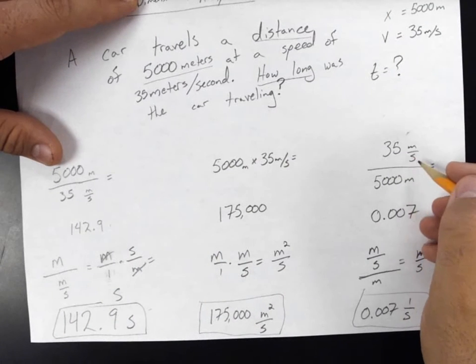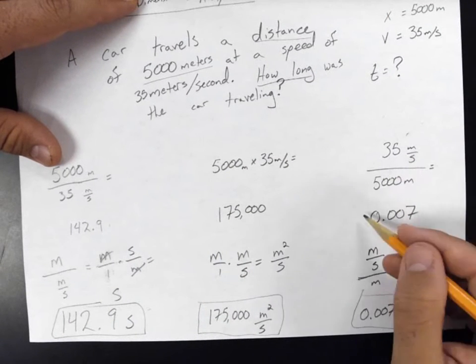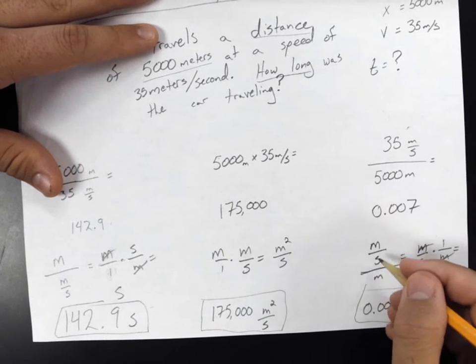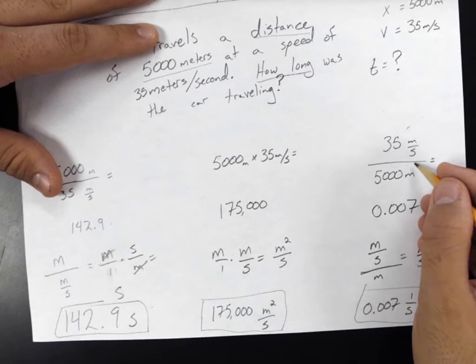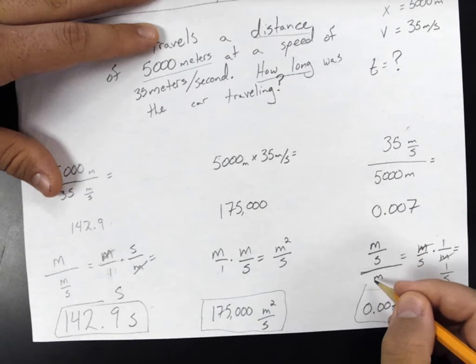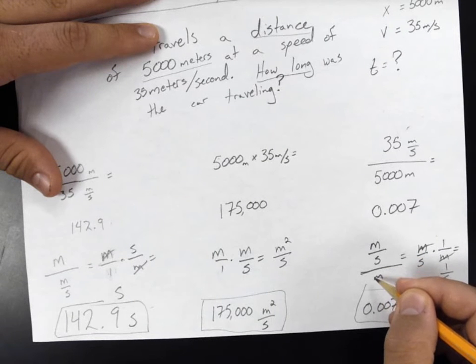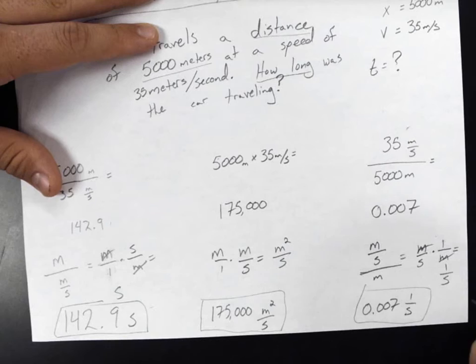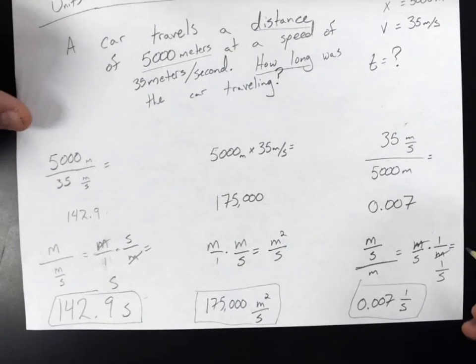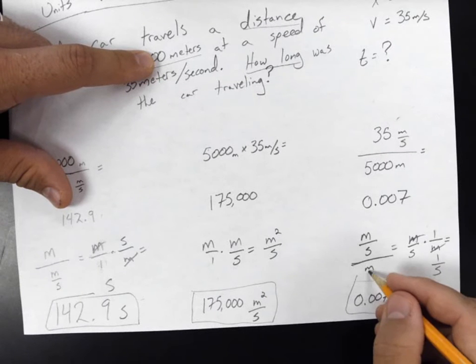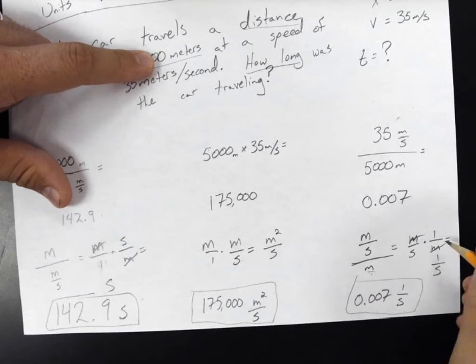We've got 35 divided by 5,000. We end up with a number of 0.007. Now if we look at the units, we've got meters per second, which we'll write right here on top, and we have meters on the bottom. So meters per second divided by meters. Now another way to write that is equal to meters per second times the reciprocal of the bottom, which you guys recall from early math. We take the reciprocal of the bottom, 1 over m instead of m over 1. The m's cancel. You're left with 1 over seconds.